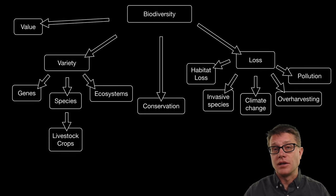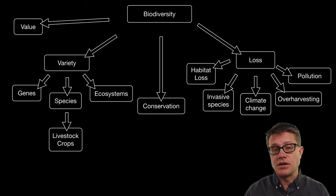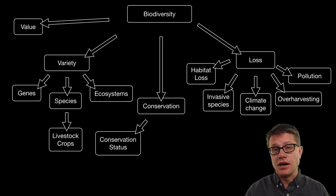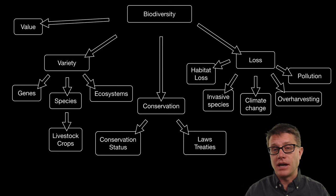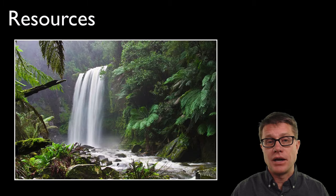And so it has led to conservation. What do we do first? We have to figure out where that biodiversity is being lost. We have to figure out the conservation status of these organisms or areas. And then finally we can pass laws and treaties to try to preserve a lot of that biodiversity.